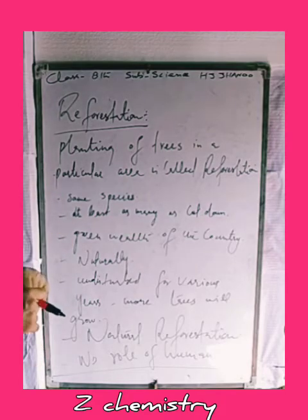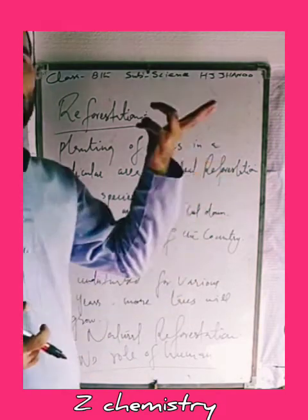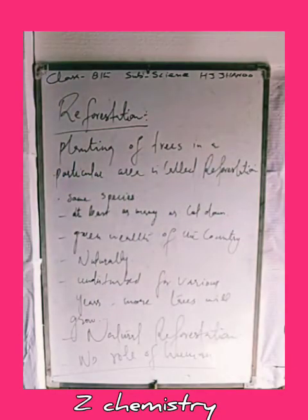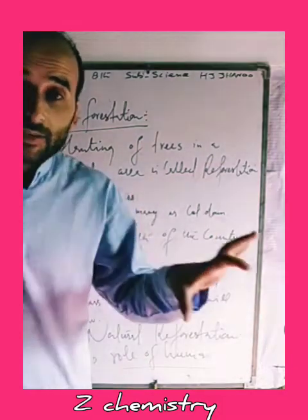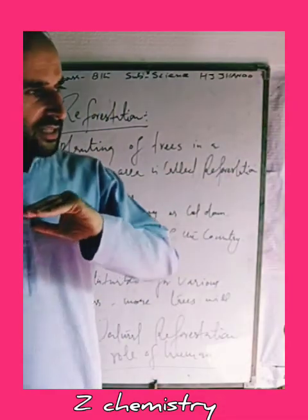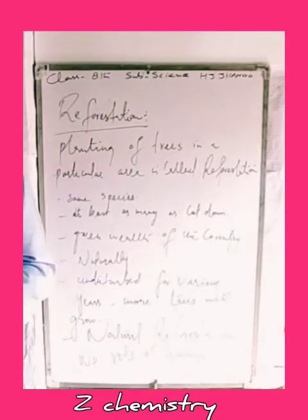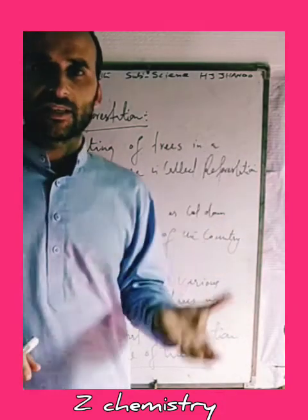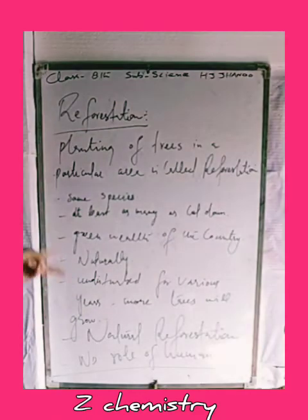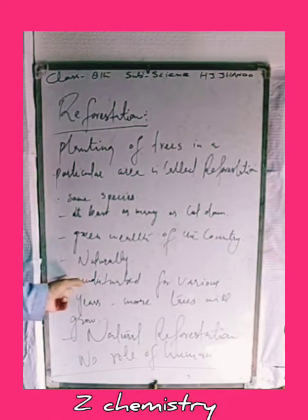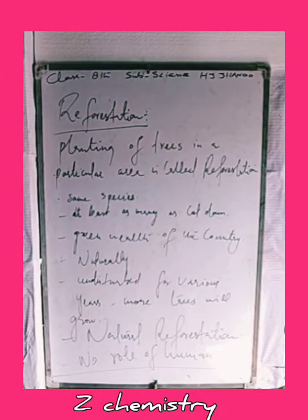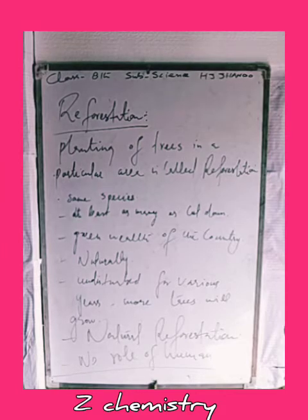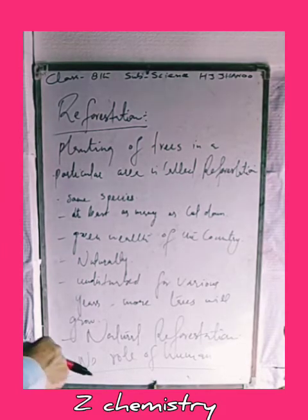Plants can grow naturally in a particular area if that particular area is undisturbed for various years. Waha pe zyada se zyada trees, zyada se zyada plantas auge sakti hai, agar ham is area ko undisturbed rakhein kaafi samay tak. This is called natural reforestation.